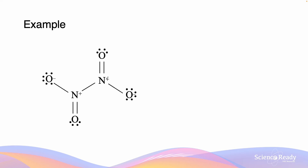For the next example, we have a compound which contains nitrogen and oxygen. Nitrogen is less electronegative than oxygen, so the nomenclature begins with nitrogen, then oxygen. Since there are two nitrogens and four oxygens, the nomenclature becomes dinitrogen tetroxide.